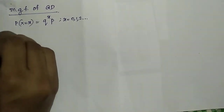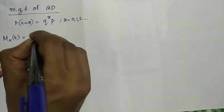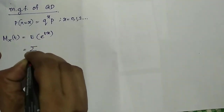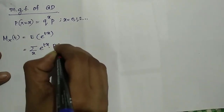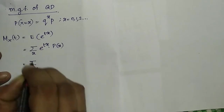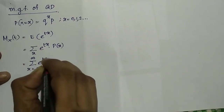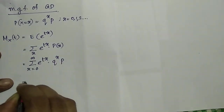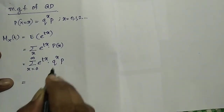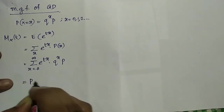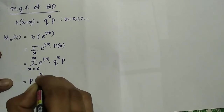Now, the moment generating function M_X(t) is equal to the expectation of e raised to tx, which is equal to summation over x of e raised to tx times p(x), which is equal to summation from x equal to 0 to infinity of e raised to tx times the probability mass function q raised to x times p.